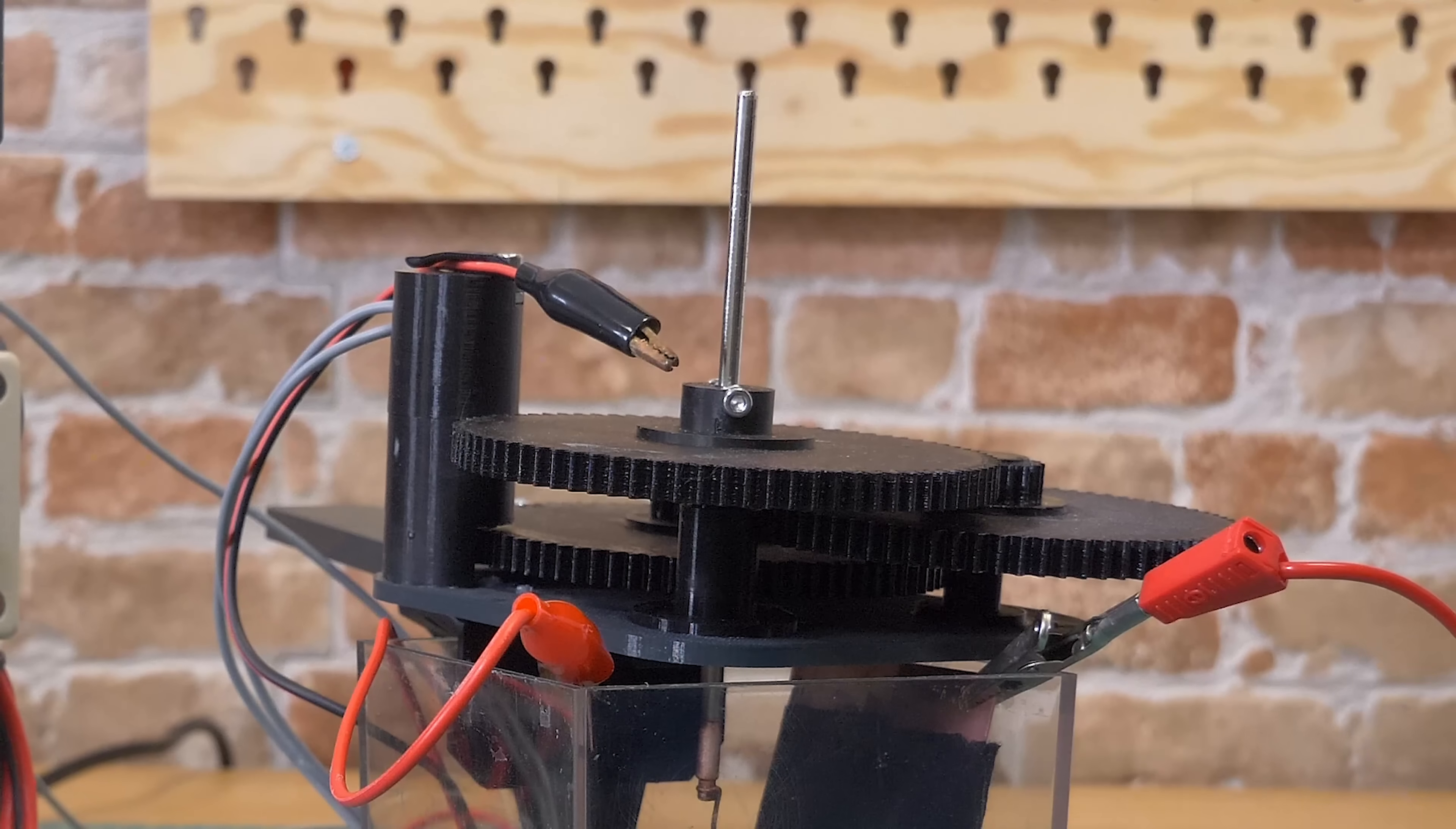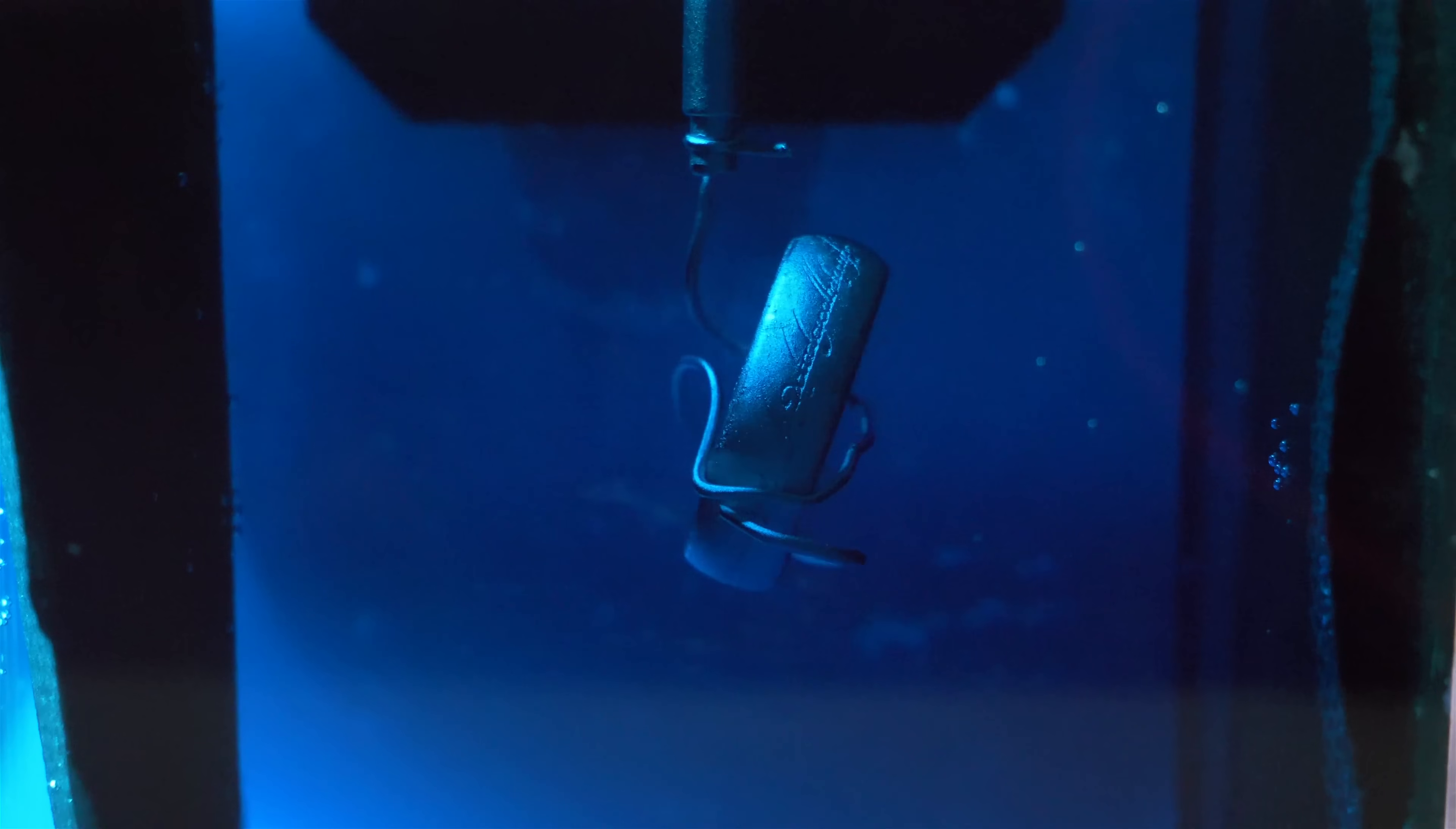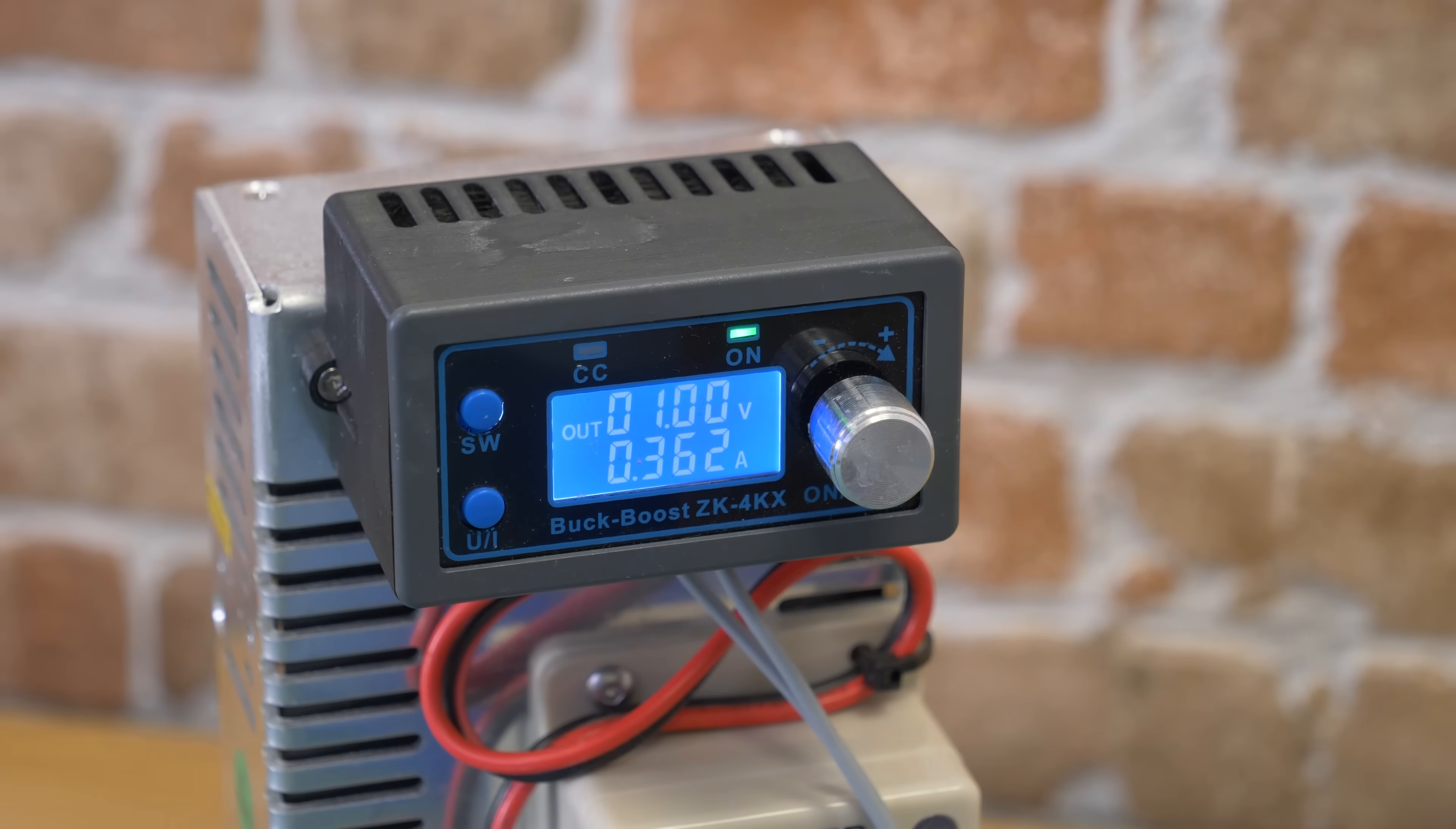The real challenge of this process is finding the correct voltage and current. We recommend setting the power supply to 0.5 volts and starting with that. Wait one hour and increase the voltage to 0.7 volts. Wait another hour, then increase it to somewhere between 1 and 1.2 volts, and wait for 4 hours.